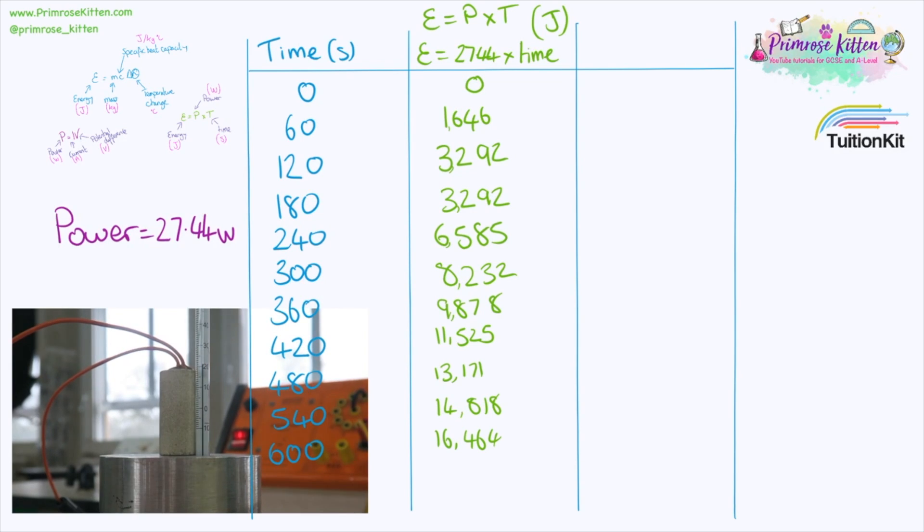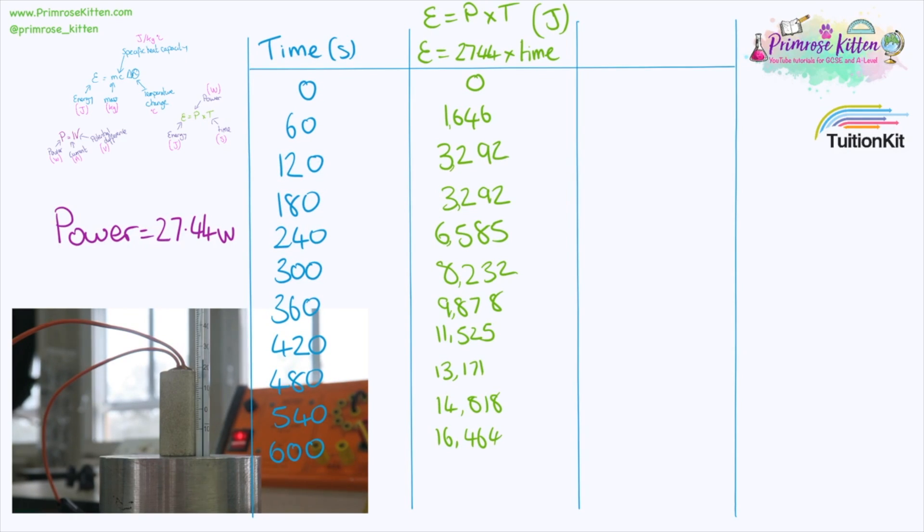Now we know from our experiment what the starting temperature was. So we can just read that off. And then what we're going to be adding in this column down here is the temperature. And we're going to be taking that temperature reading every minute. This is for the aluminum block. You might have collated your results as a class or you might have done all of the blocks.